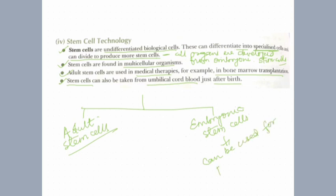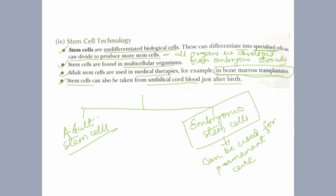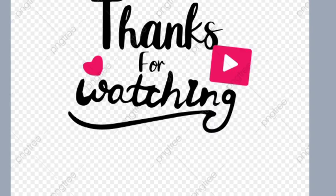Stem cells can be used for treatment and permanent cure. If you want a permanent cure, you can use normal fetal stem cells. And if you treat at the embryonic stage, that will provide permanent cure. If you treat in the embryo, you will be able to achieve permanent cure.